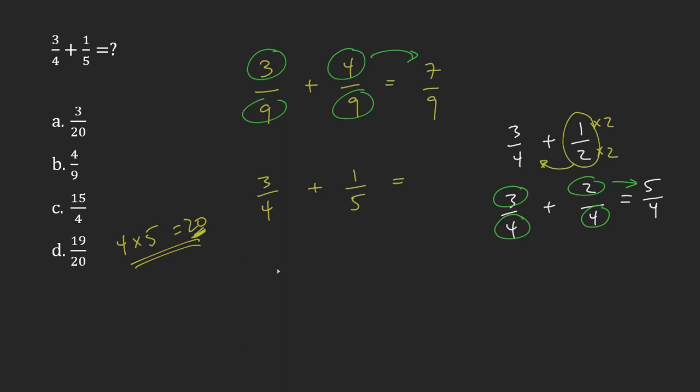So I'm going to change this to being over 20 and over 20, but I have to think about how did I get there. So it was 4 times 5 on the bottom, so I have to do 3 times 5 on the top. 3 times 5 gives me 15. How did I get to 20 from 5? 5 times 4 gives me 20, so it's got to be 1 times 4 and so that gives me 4.